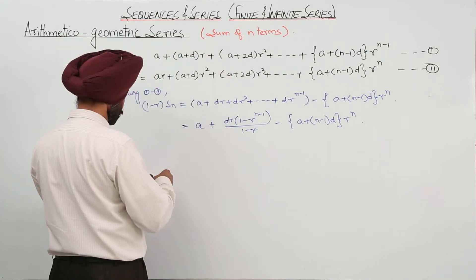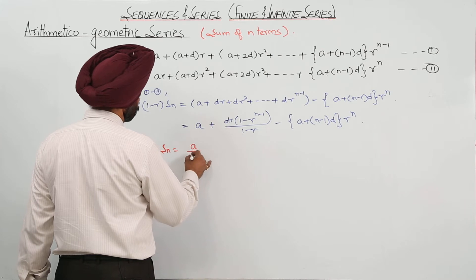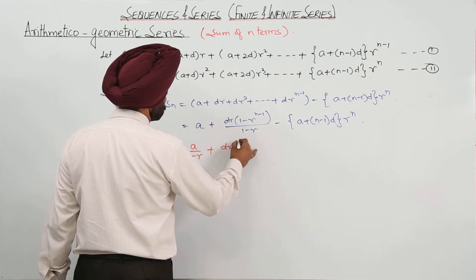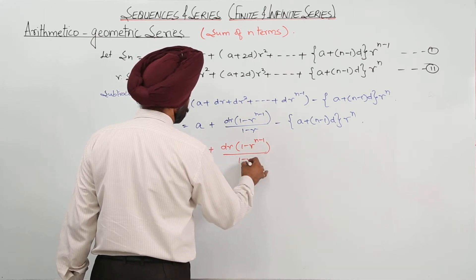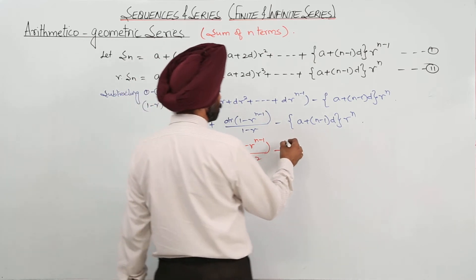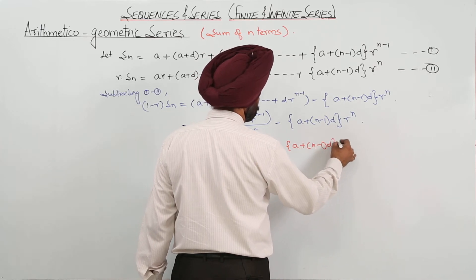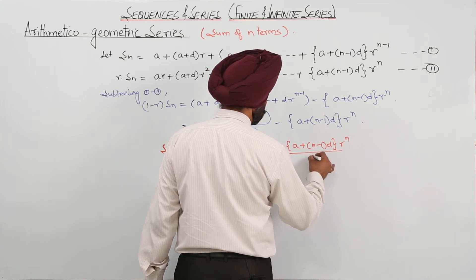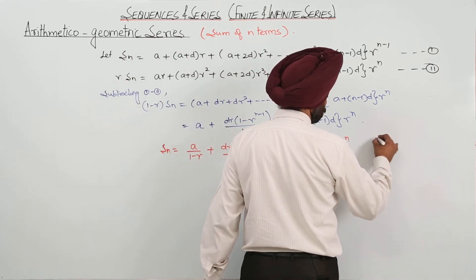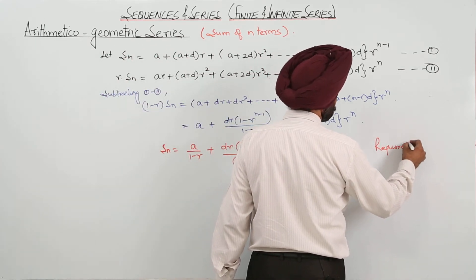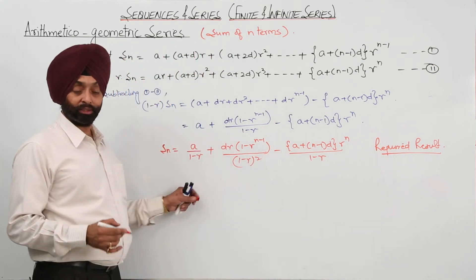Therefore S_n equals a upon (1 minus r) plus dr upon (1 minus r) squared minus (a plus (n minus 1)d) r raised to power n, all over (1 minus r). This is the required result and serves as our formula for the sum of n terms of an arithmetico-geometric series.